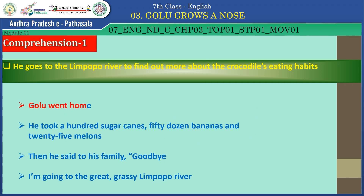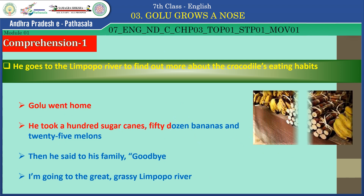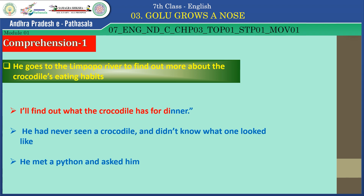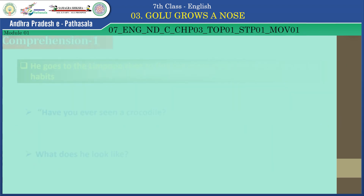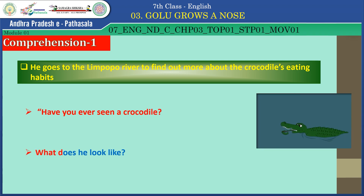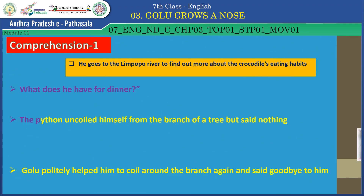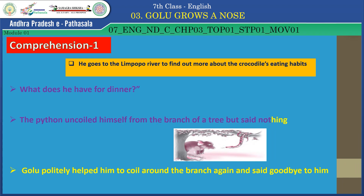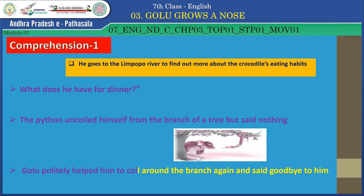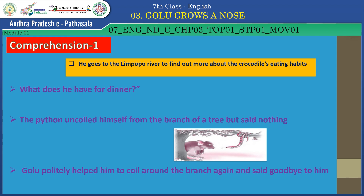Golu went home. He took a hundred sugar canes, fifty dozen bananas, and twenty-five melons. Then he said to his family, 'Goodbye, I am going to the great, grassy Limpopo River. I will find out what the crocodile has for dinner.' He had never seen a crocodile and didn't know what one looked like. He met a python and asked him, 'Have you ever seen a crocodile? What does he look like? What does he have for dinner?' The python uncoiled himself from the branch of a tree but said nothing. Golu politely helped him to coil around the branch again and said goodbye to him.